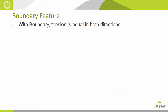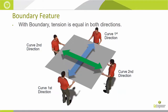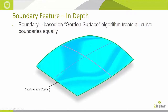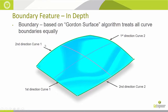With the boundary feature you have tension in all directions — just imagine four people holding up a blanket and pulling it in all different directions. With the boundary feature we have the first direction curve and the second curve for the first direction. Similarly, two curves on the other end dictate the second direction. The boundary feature is based on the golden surface algorithm and it's going to treat all these curves equally.